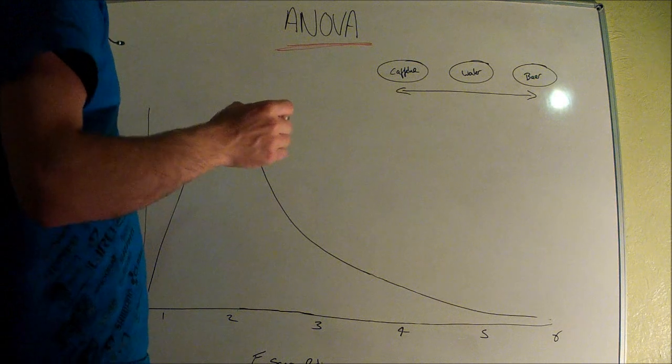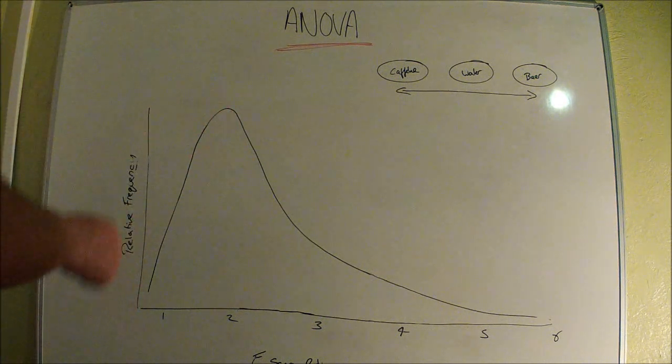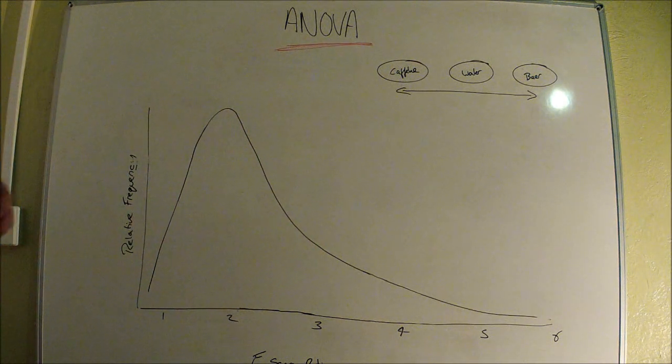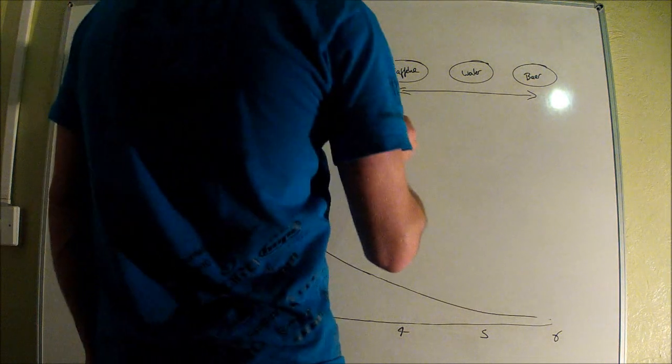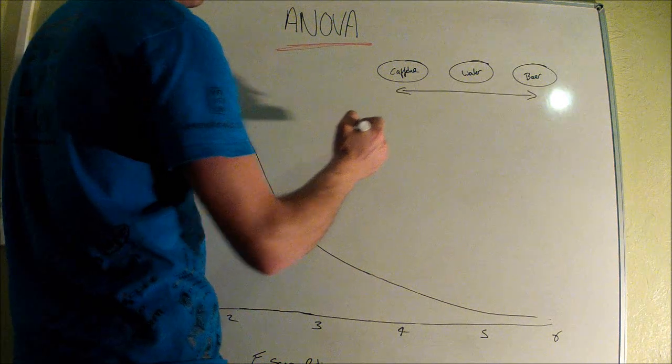ANOVA aims to create an F value to then compare it to the F ratio, very similar to T scores and Z scores. This is our calculated F score.